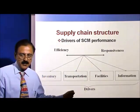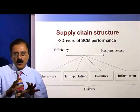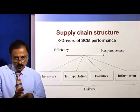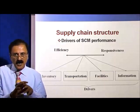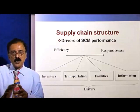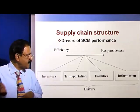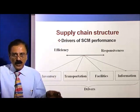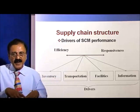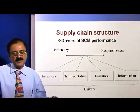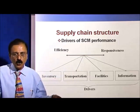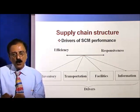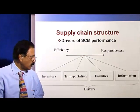The second factor is transportation. In case of cost, since the locations are few, your inbound cost is low and outbound cost is high. It is the reverse in case of responsiveness — several locations catering to several segments of the market, so you tend to have higher inbound cost but lower outbound cost.